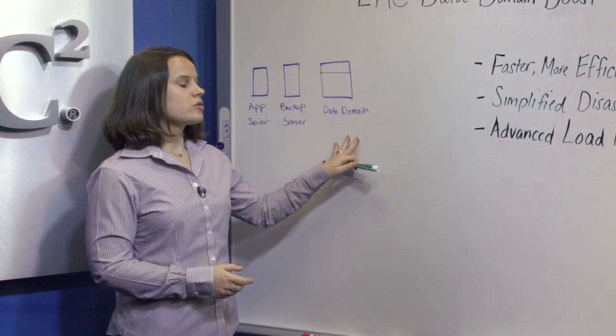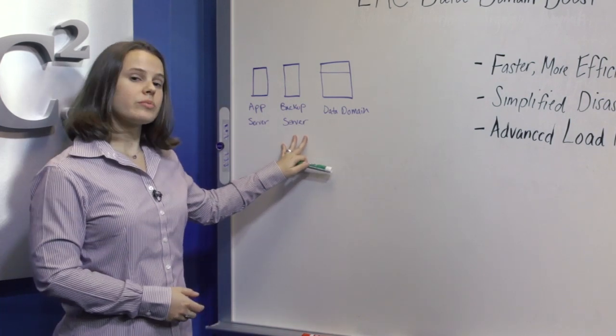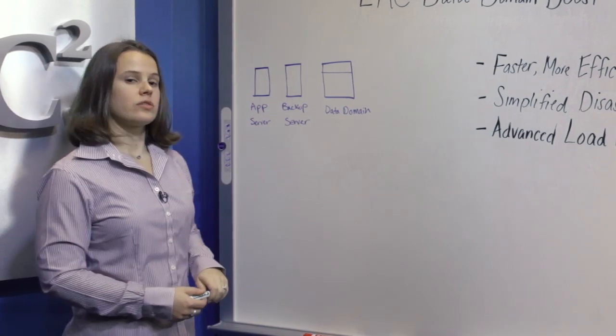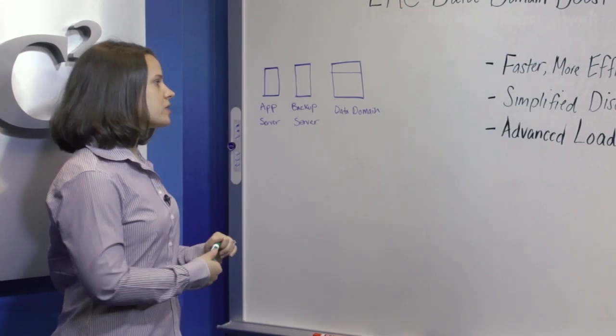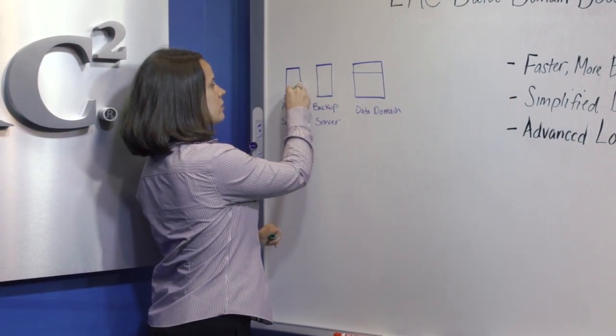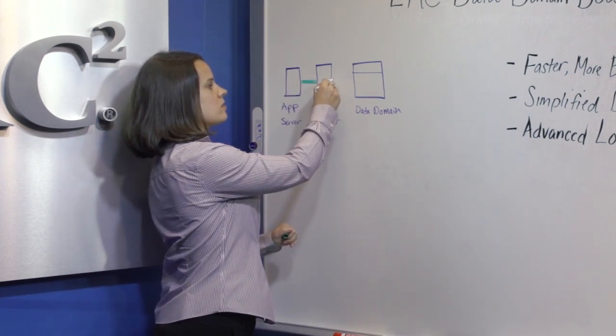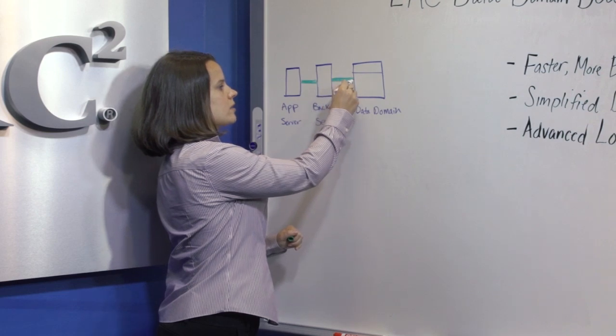Data Domain Boost distributes parts of the deduplication process to the backup server or application server. Without DD Boost, the application server will send all data, unique or redundant, over the network to the backup server and then to the data domain system.